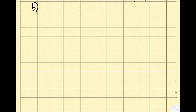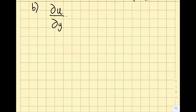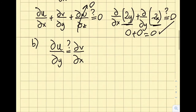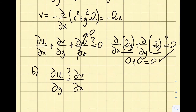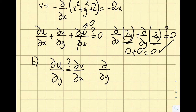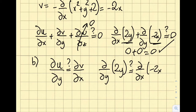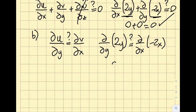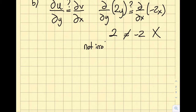In the second part of the question I need to find the velocity potential, if possible. Before doing that, I have to check whether this flow is irrotational. I will check whether ∂u/∂y equals ∂v/∂x. So: ∂(2y)/∂y on the left-hand side gives 2, and ∂(−2x)/∂x on the right-hand side gives −2. Since 2 ≠ −2, this is not irrotational.